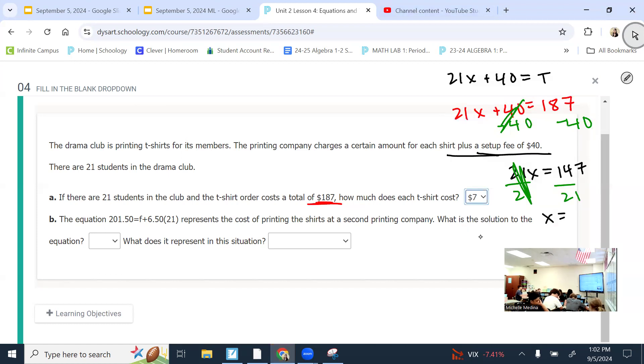I get 21x equals $187 minus $40 is $147. What's opposite of multiplying 21? Dividing. And whatever you do on one side, you do to the other side. So, now, 147 divided by 21. I get 7. Hopefully, that's a dropdown option. And it is.